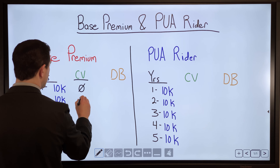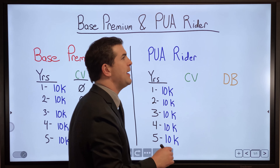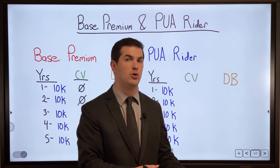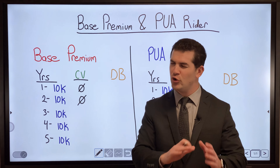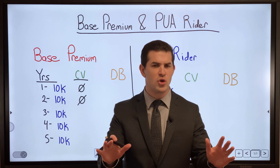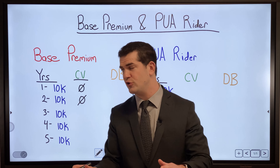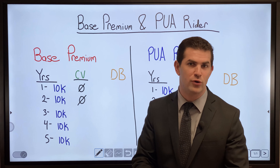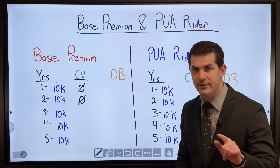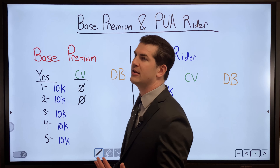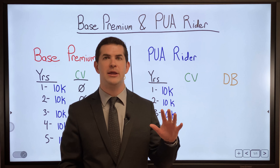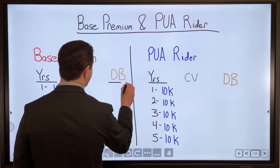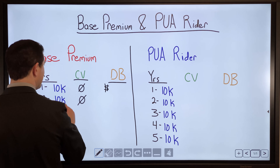With $10,000 going into the base premium of a traditional whole life insurance policy, you will often see zero or very little cash value returned in the early years — whether the premium is $1,000, $10,000, or $100,000 per year. The reason is that the company overcharges for the death benefit in the first two years.